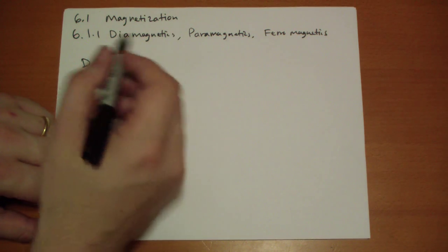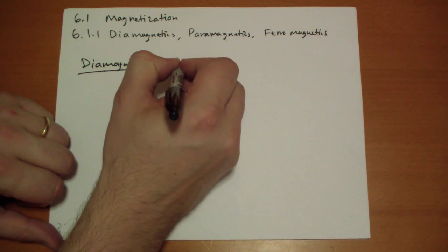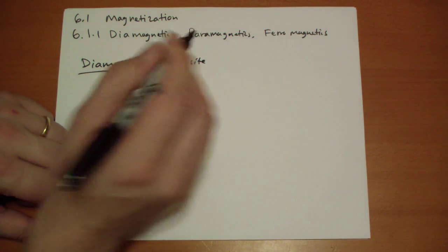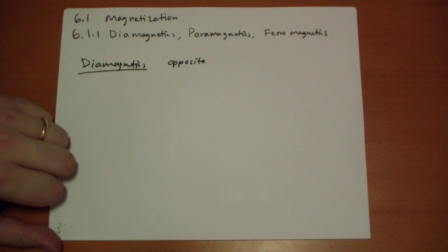But when you do put in a magnetic field, it produces a magnetic field opposite to it. So it has a tendency to kind of cancel out whatever magnetic field it's subjected to.